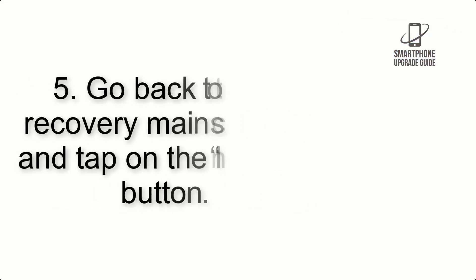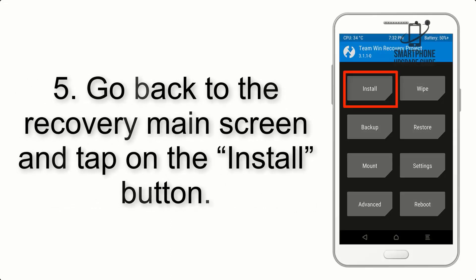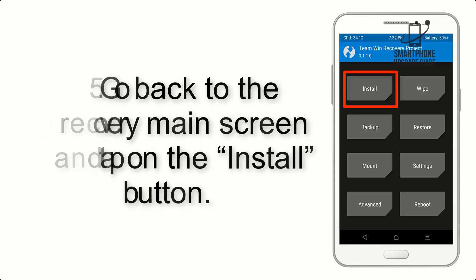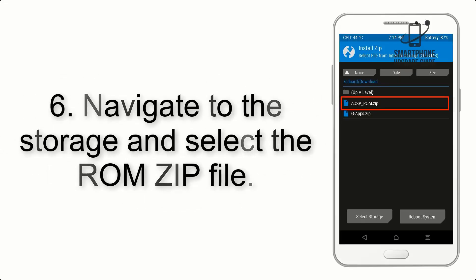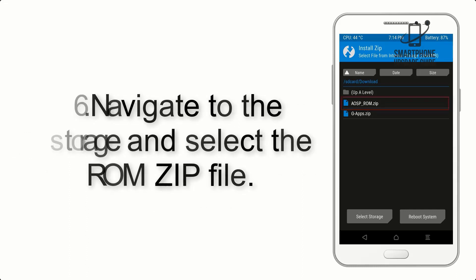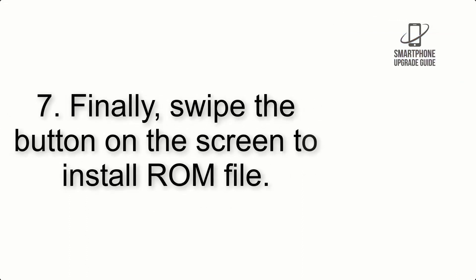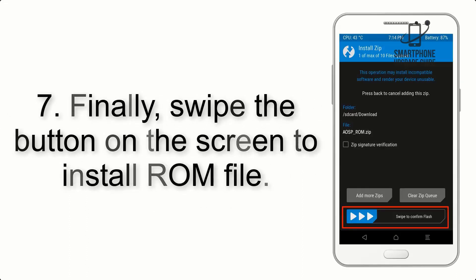Step 4: Swipe the button to wipe the device. Step 5: Go back to the recovery main screen and tap on the Install button. Step 6: Navigate to the storage and select the ROM zip file.